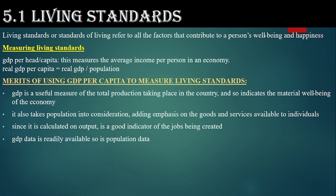GDP per capita also takes population into consideration, emphasizing the goods and services available to individuals. If fewer products are available, it suggests customers have a better living standard and can afford products. Since it is calculated on output, it is also a good indicator of the jobs being created, and GDP data is readily available, as is population data.